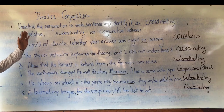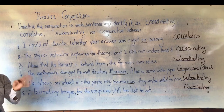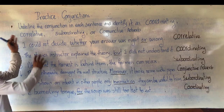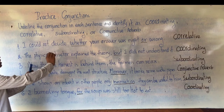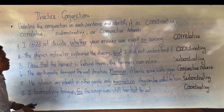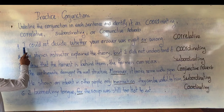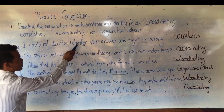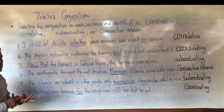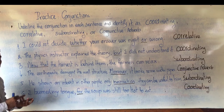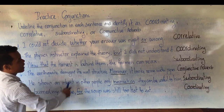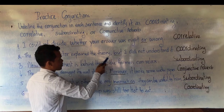Now let's review the practice. There are four types of conjunctions, and conjunctive adverbs are considered conjunctions as well. The instruction: underline each conjunction or conjunctive adverb and identify its type. Example one: 'whether...or' equals correlative conjunction — a pair conjunction. Whether/or, not only/but also, neither/nor, either/or, both/and are all pair conjunctions. Example two: 'but' joins two independent clauses with a comma — coordinating conjunction.